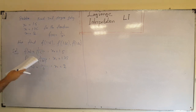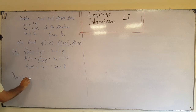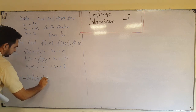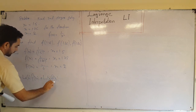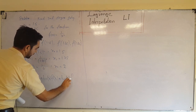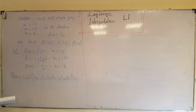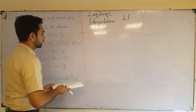Now we have to write down the interpolating polynomial formula. P₂(x) = L₀(x)·f(x₀) + L₁(x)·f(x₁) + L₂(x)·f(x₂). It is always good to write down the formula first so that you do not miss out anything. You can then write down the values of each Lagrange basis function.